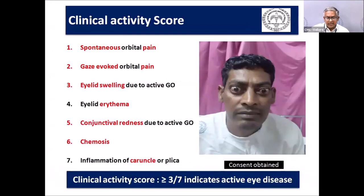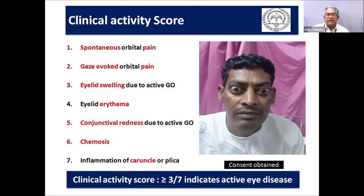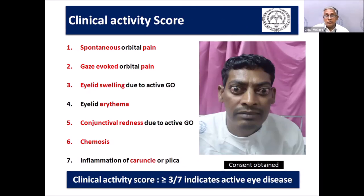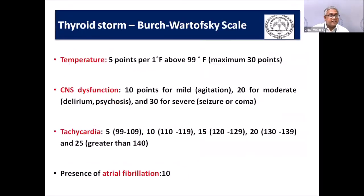For thyroid-associated ophthalmopathy (TAO), the clinical activity score has seven points: spontaneous pain, pain on movement, eyelid swelling, eyelid redness, conjunctival redness, conjunctival swelling, and inflammation of the caruncle. A score of three or more indicates active inflammation. Imaging is done and TSH receptor antibody is measured when facilities are available, followed by immunosuppression.